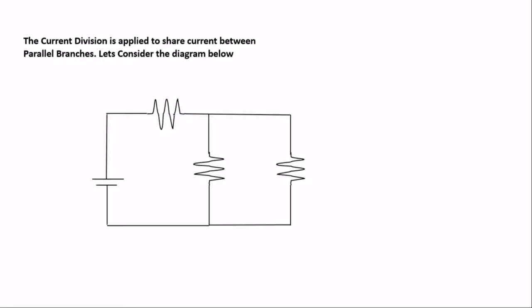We have our voltage source here — that's the main source. The current moves from the positive terminal of the source. This is i, the total current from the main source, moving to the resistance.